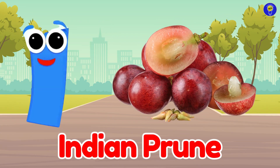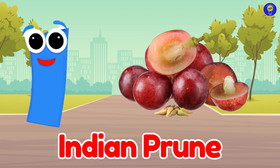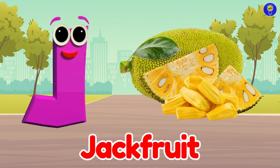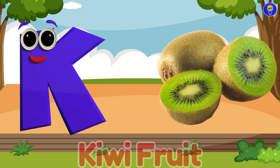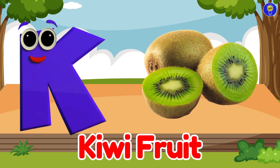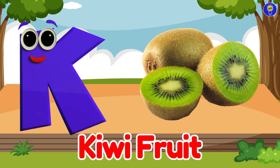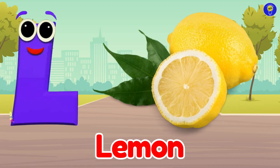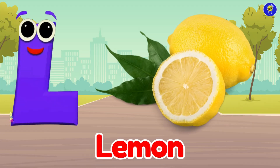I is for Indian prune. Eh, eh, Indian prune. J is for jackfruit. Juh, juh, jackfruit. K is for kiwifruit. Cuh, cuh, kiwifruit. L is for lemon. Luh, luh, lemon.